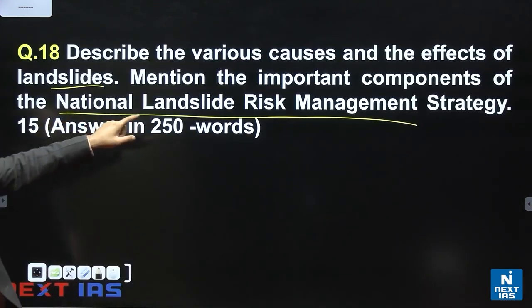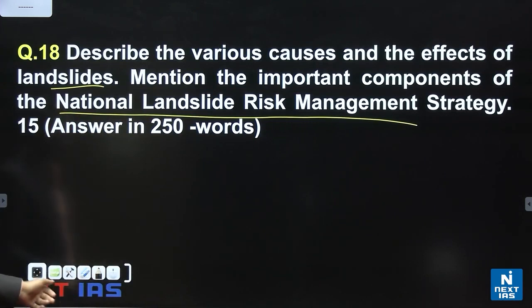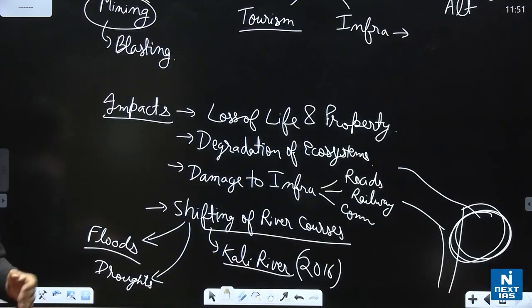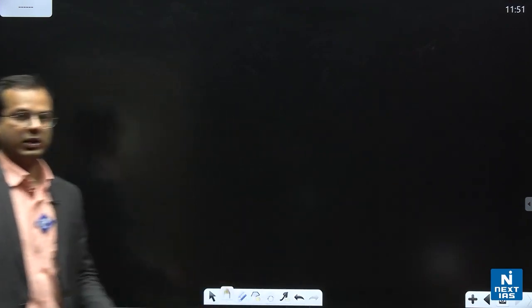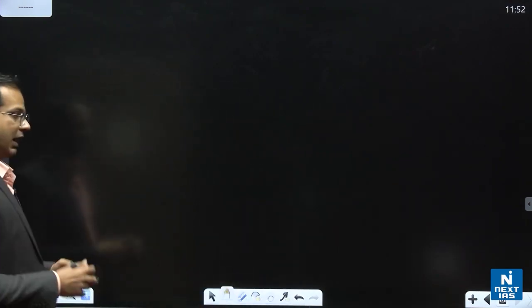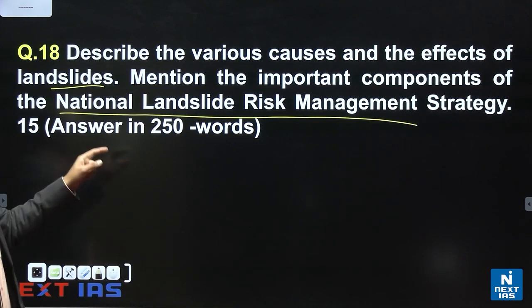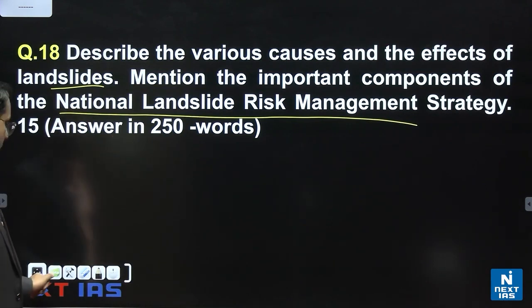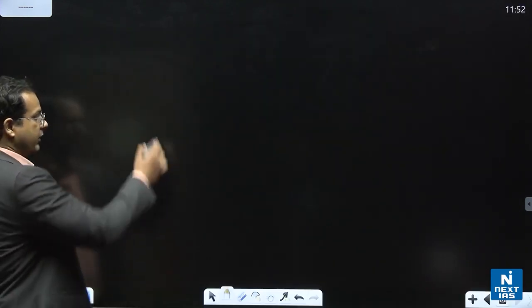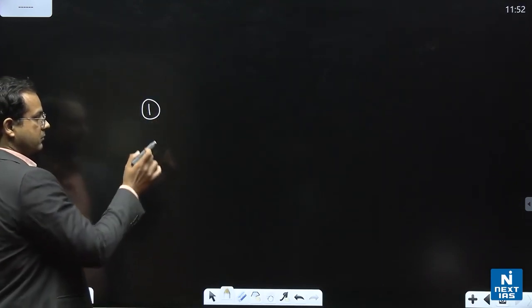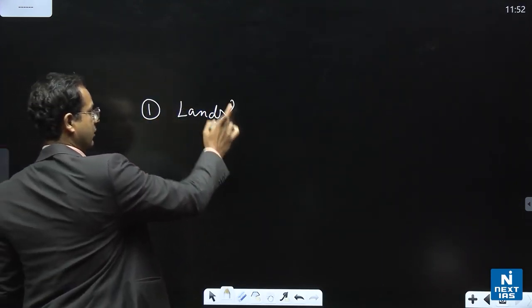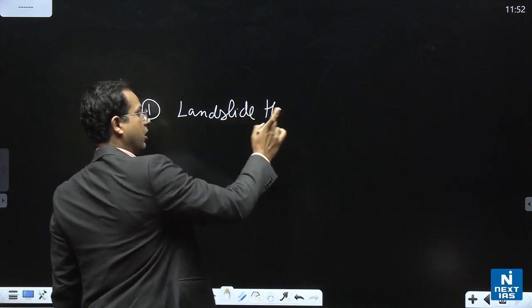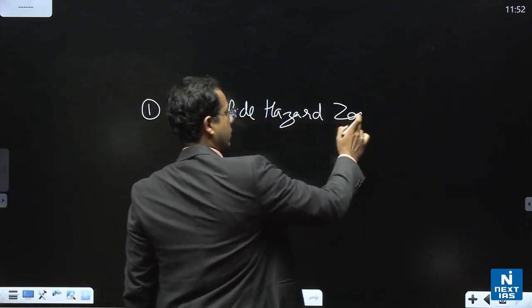We have to discuss the national landslide risk management strategy. Even if you don't know exactly what the strategy is, there are always some bullet points that you can write. So the main points of the national landslide risk management strategy - number one is landslide mapping, landslide hazard zonation.